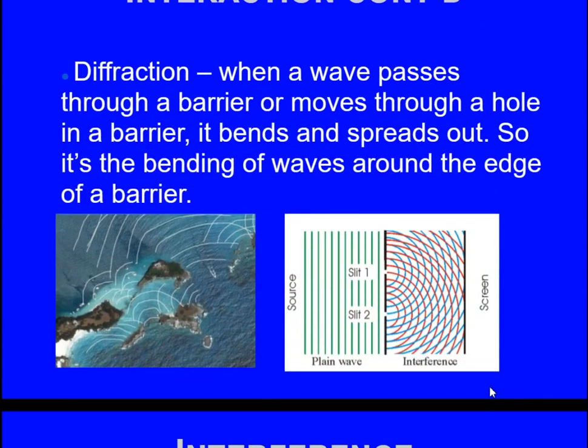Then we have diffraction. As you can see here from the photos, I have a source and I have teeny tiny slits. When a wave passes through a barrier or moves through a hole in a barrier, it bends and spreads out. So it's the bending of waves around edges of a barrier. As you can see here as well in the ocean, those are the barriers, and this is the spreading out of the wave.